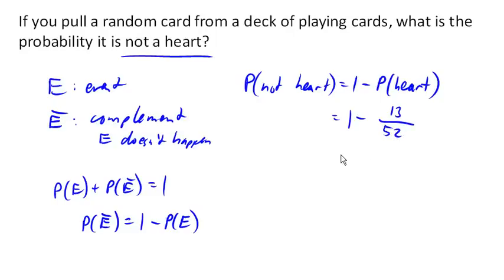So 1 minus 1 quarter, and that would be 3 quarters. So there's a 3 quarters, or 75% probability, of not getting a heart.